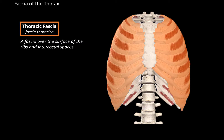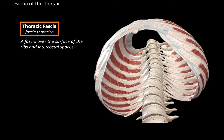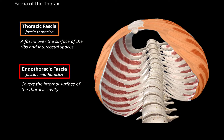The other fascia is associated with the internal surface of the thoracic wall. Looking at the thorax from this perspective, we still have the thoracic fascia in orange. The inner surface of the thoracic cavity is covered by a fascia called the endothoracic fascia, as you see here in red.